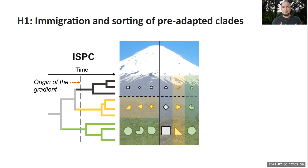In this scenario, the species that you find in different environments belong to clades that are older than the environmental gradient, and the adaptations necessary to survive these conditions also evolved for the most part before the emergence of the environmental gradient.